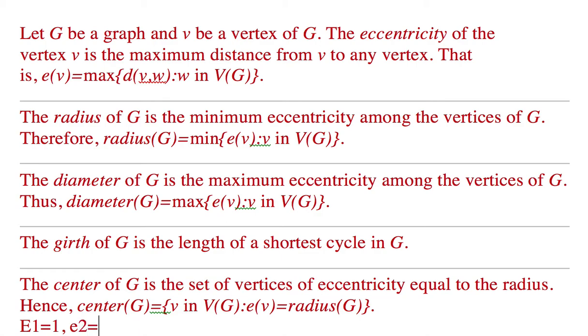e2 equals 2, e3 equals 4, e4 equals 1, and e5 equals 1. In this example, the diameter will be 4, which is the maximum eccentricity.